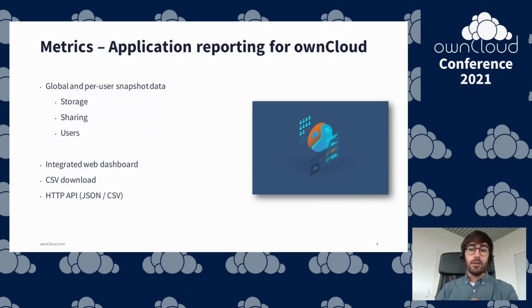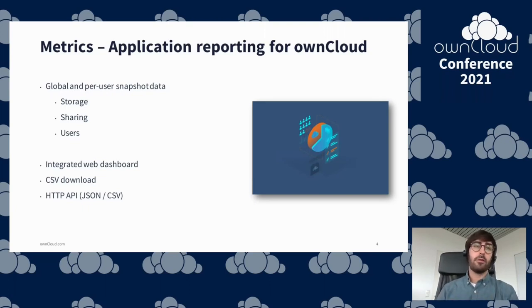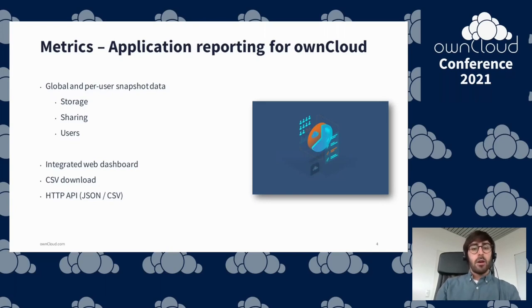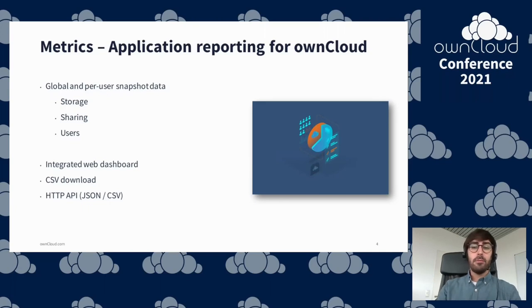For simple use cases, administrators get an integrated dashboard in the OnCloud user interface that shows the current data set and allows exporting it as CSV so it can be used to gather historical data and visualize it for stakeholders. For more advanced use cases, it also provides an HTTP API that can be used to automatically request the data at certain intervals, store it, and use it in external tools.